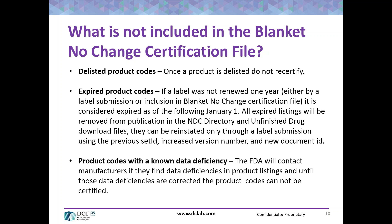The third category of product codes not to include are those with a known data deficiency. The FDA will contact manufacturers if they find data deficiencies in product listings. Until those data deficiencies are corrected, the product codes cannot be certified. If you get a data deficiency notice from the FDA, you better update your SPL in order to get those products certified.